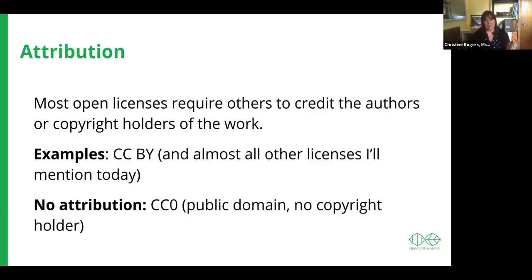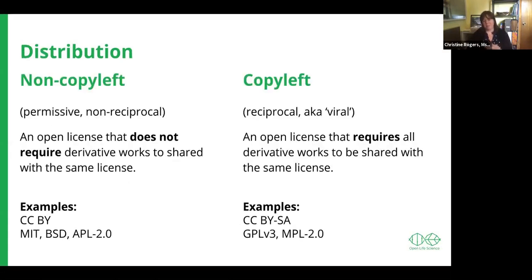Moving on from attribution, the next important thing is distribution. When you're distributing something — the original or something you've modified — what are your rights and obligations? The two main types are non-copyleft and copyleft. Starting with non-copyleft: this is a permissive, non-reciprocal license. The important point is that it's an open license that does not require derivative works to be shared using the same license. Examples are the CC BY license, MIT, BSD, and the APL 2.0 license.